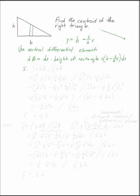Now by definition, the location of the centroid is the integral of x dA divided by the integral dA. If I plug in what I just said for dA, I have the integral from zero to b of x times h minus h over b x dx divided by the integral from zero to b of h minus h over b x dx.